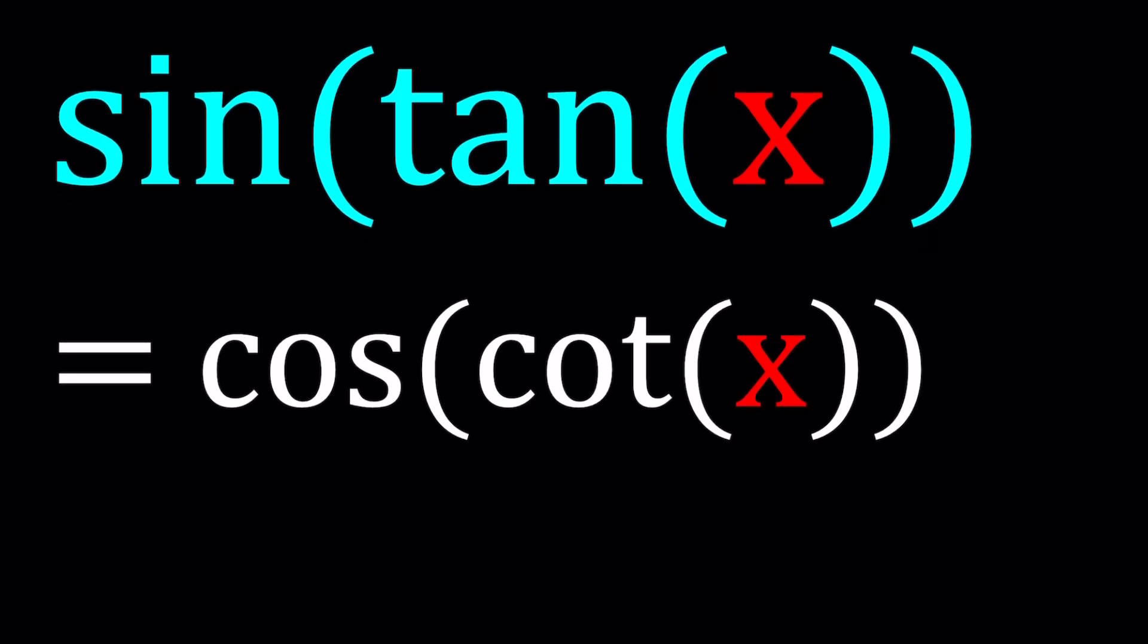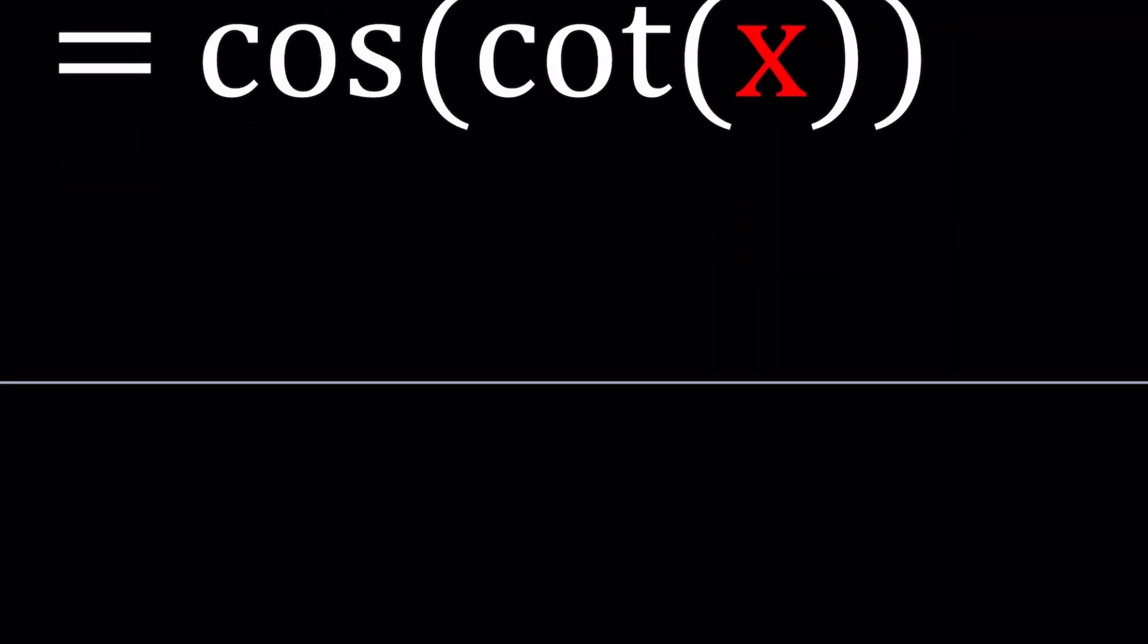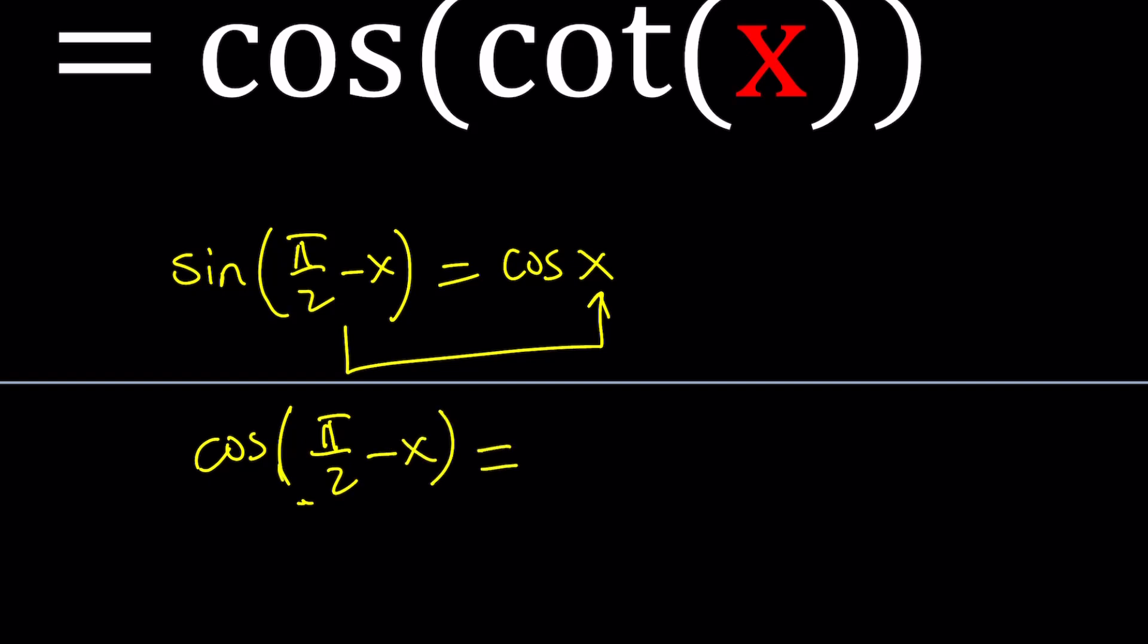We have done a similar problem before with sine, cosine, and cosine, sine. Now we have two different functions. But sine and cosine, you can actually find the relationship between them by considering the following. If you have two angles that are complementary, then this is true. And pi over 2 minus x and x are actually complementary because they add up to pi over 2.